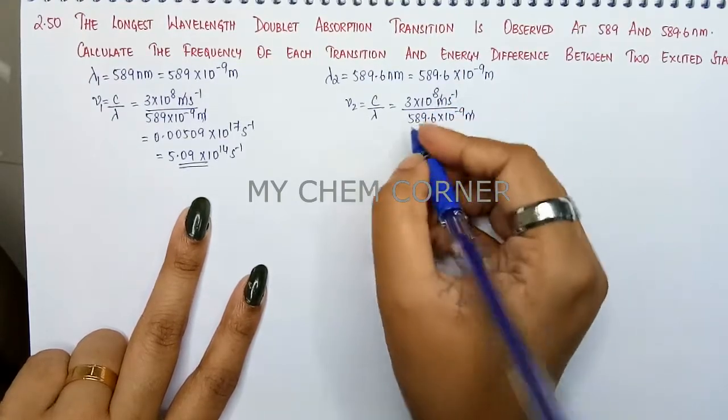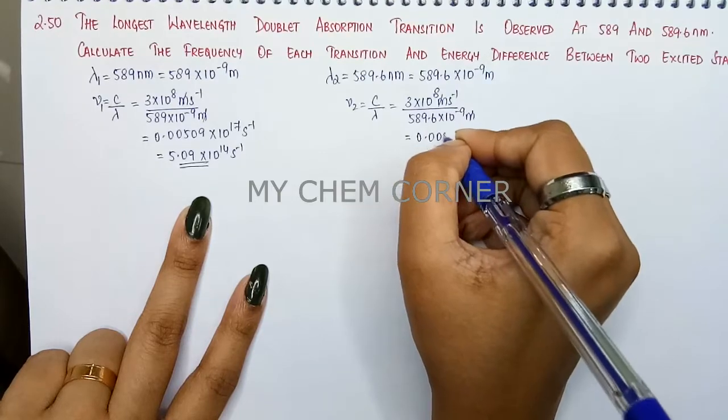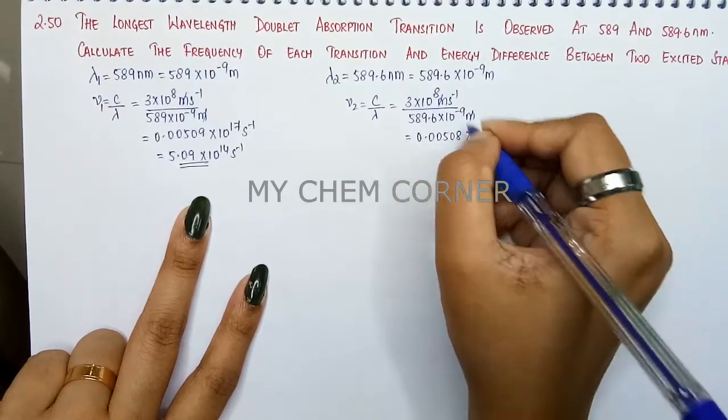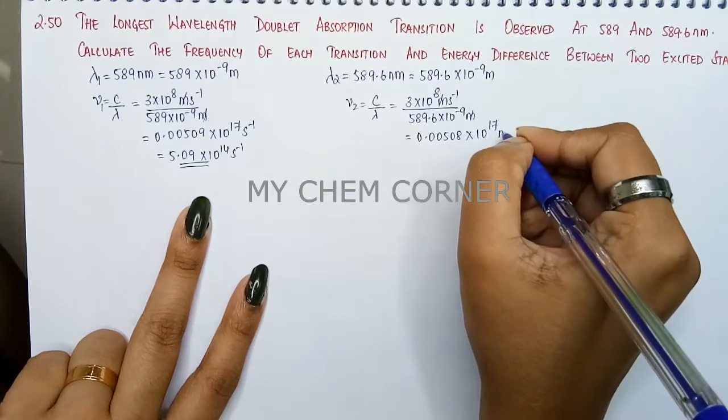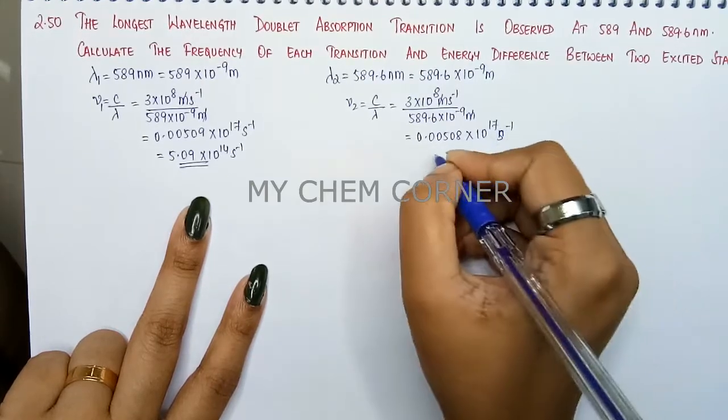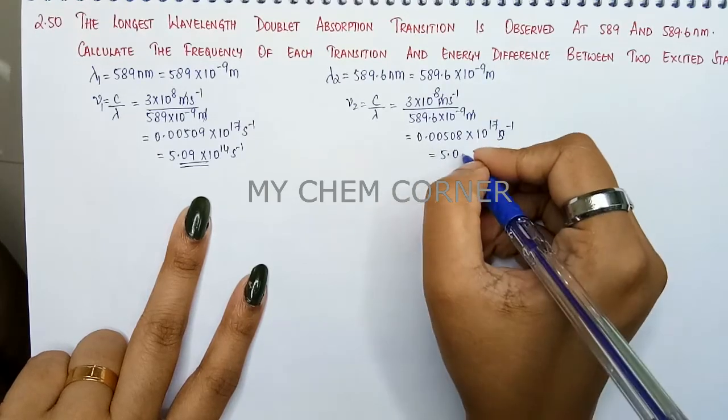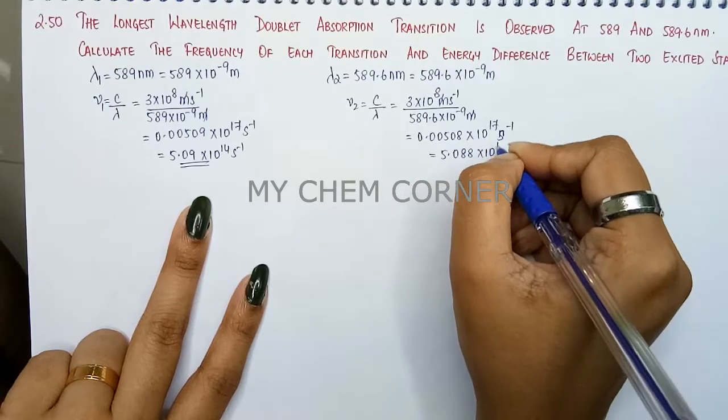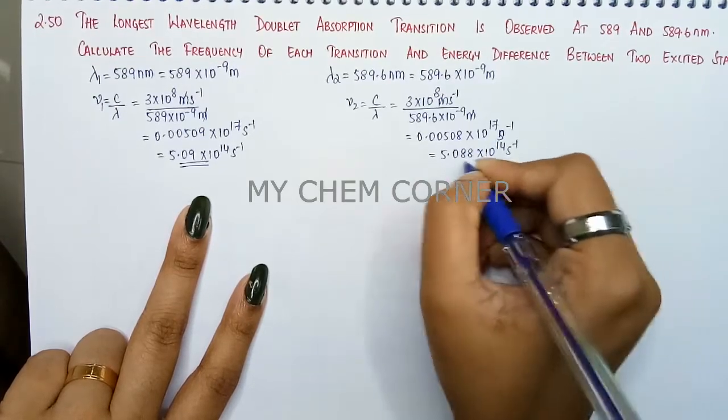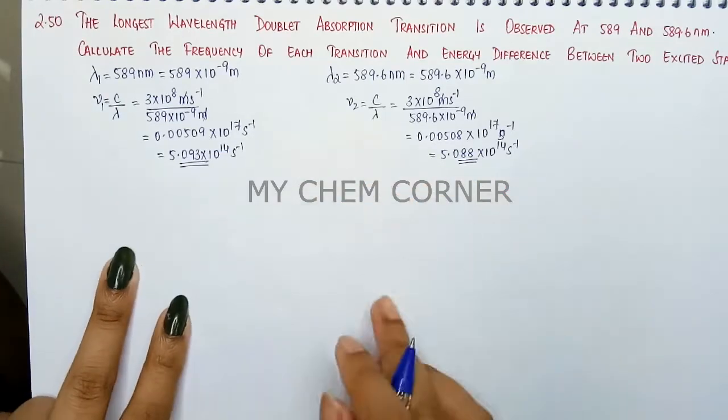Meter and meter will get cancelled. 3 by this number is going to give me 0.00508 into, 8 plus 9 will become 10 to the power 17 seconds inverse. When I shift the decimal it will become 5.088 into 10 to the power 14 seconds inverse. We'll take one more decimal here, so that gives the major difference in this.